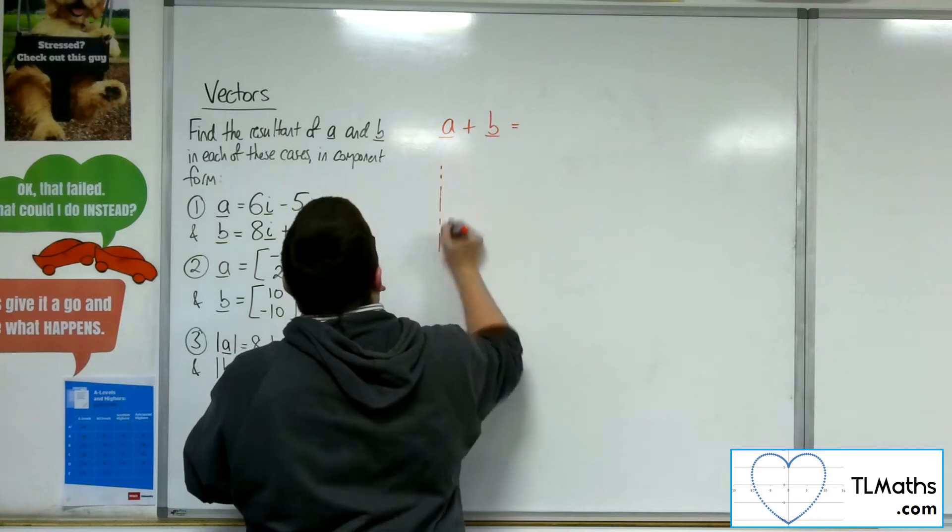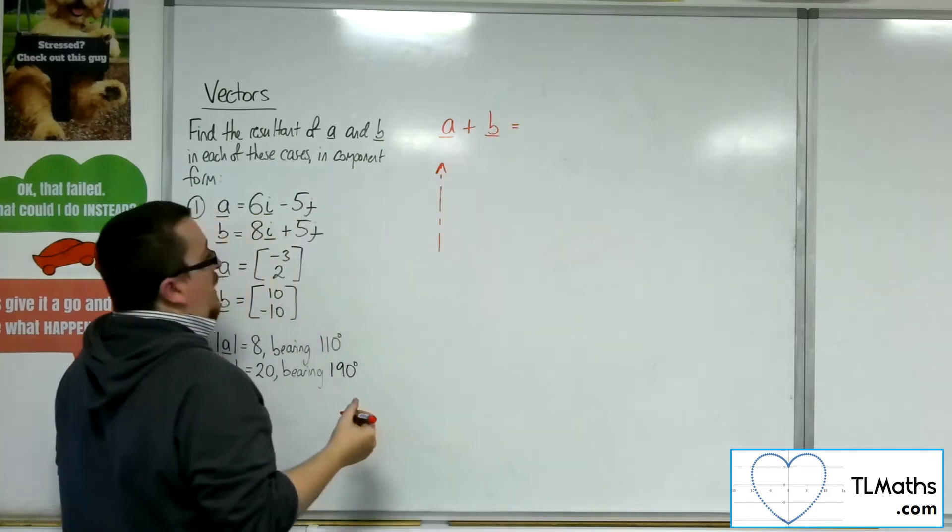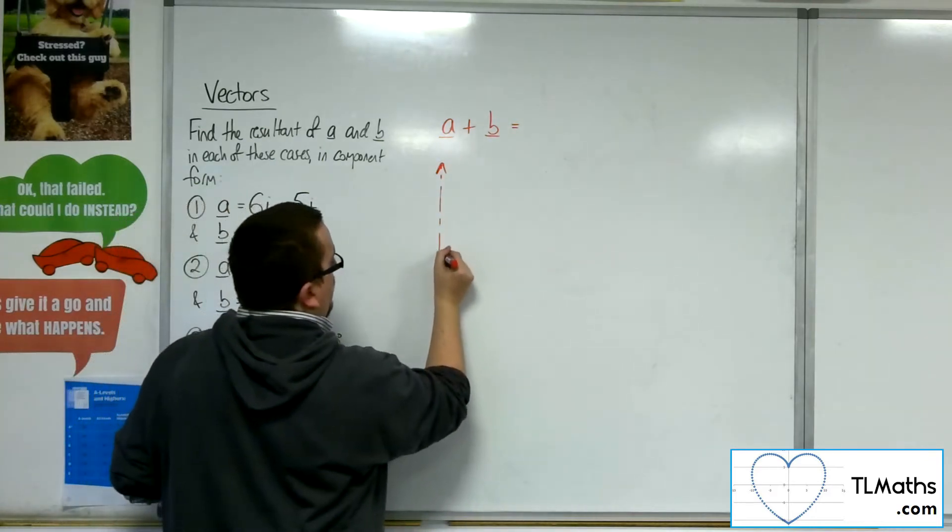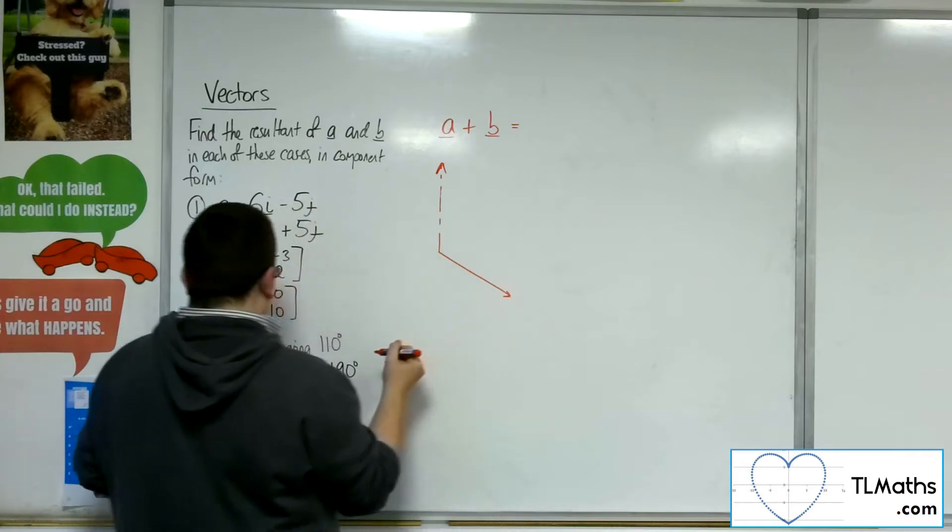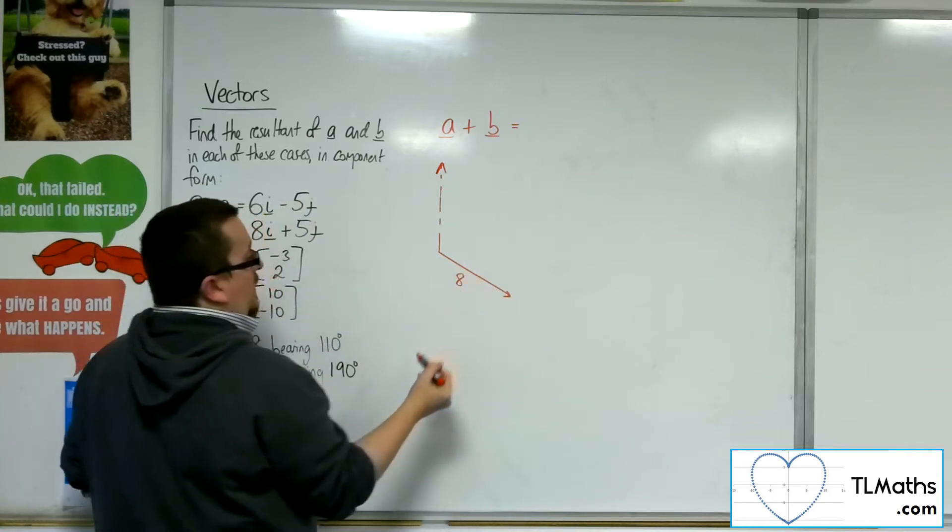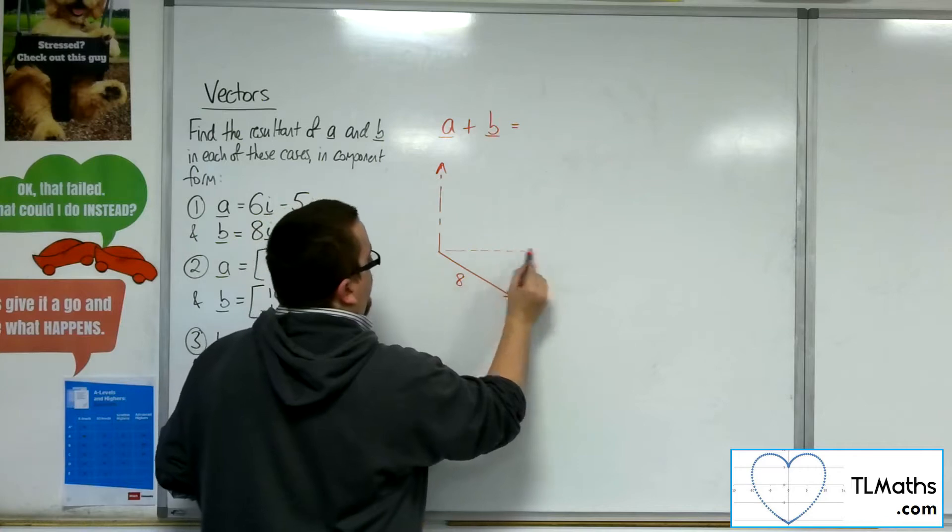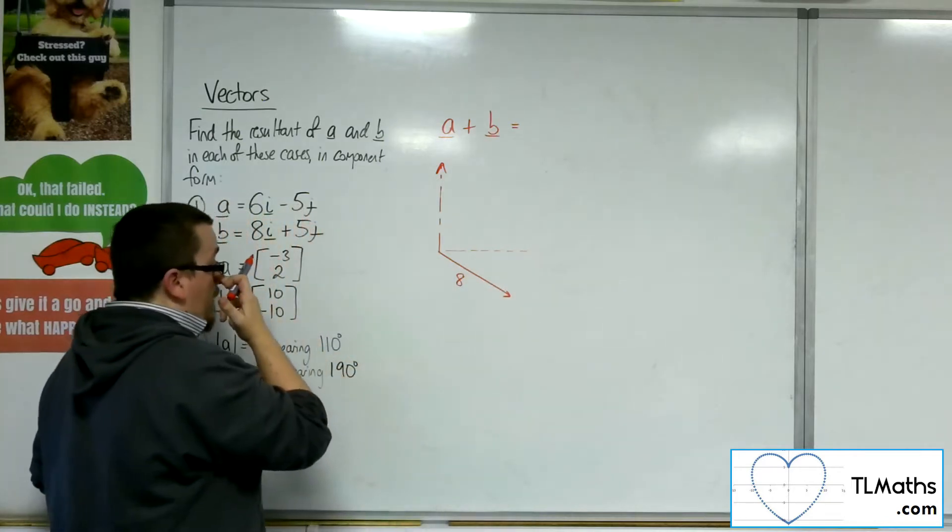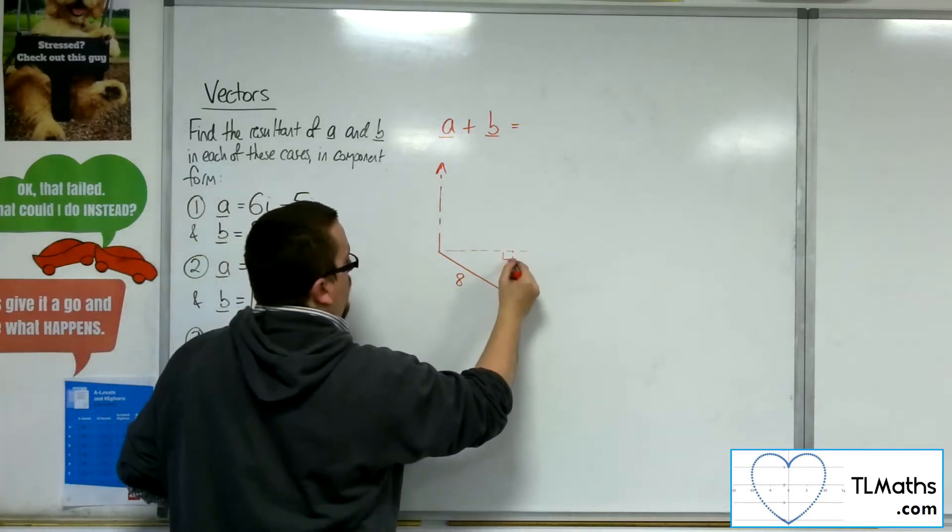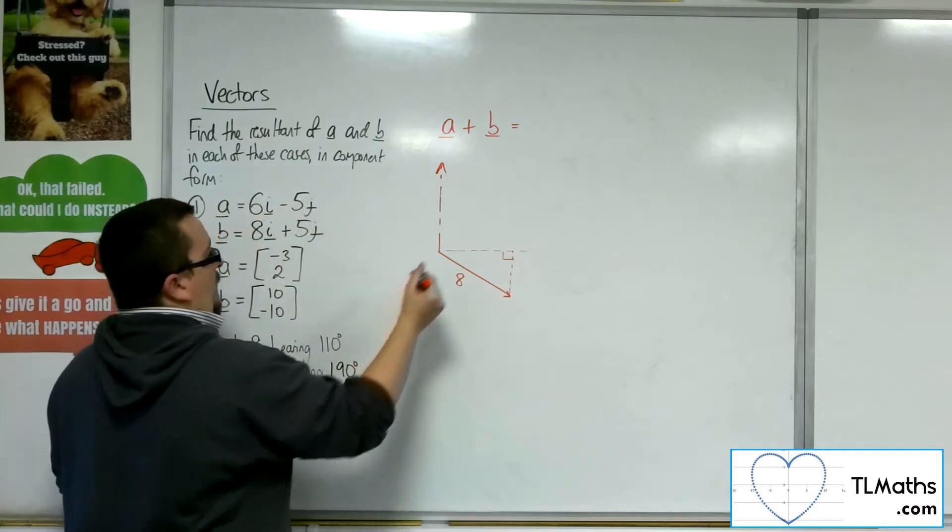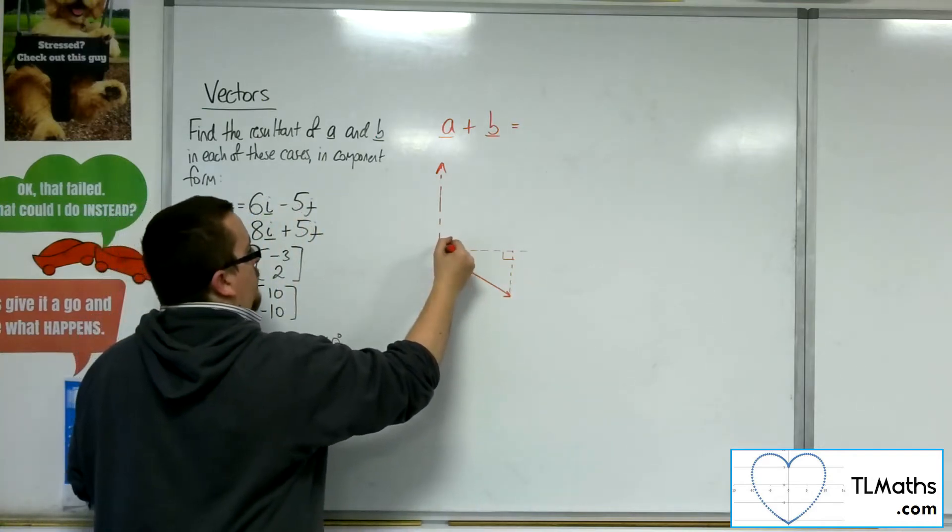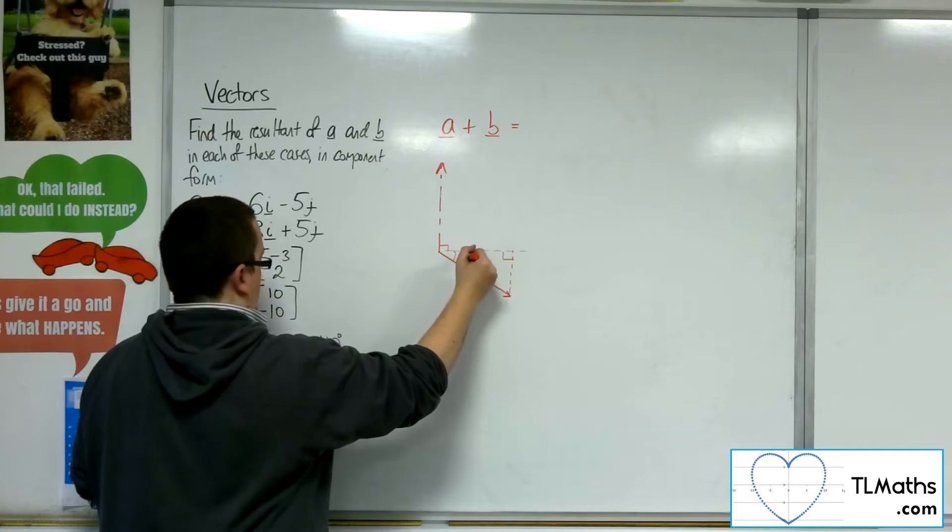So let's have a look at a first. So we want a bearing of 110 degrees, so if I draw in a north line, then 110 degrees is going to be going off somewhere that way. So that is of length 8, so what I'll do is I'll draw in a horizontal line there. I can draw in a right-angled triangle. So this angle here, if that would be 90 degrees, and so that would be 20.